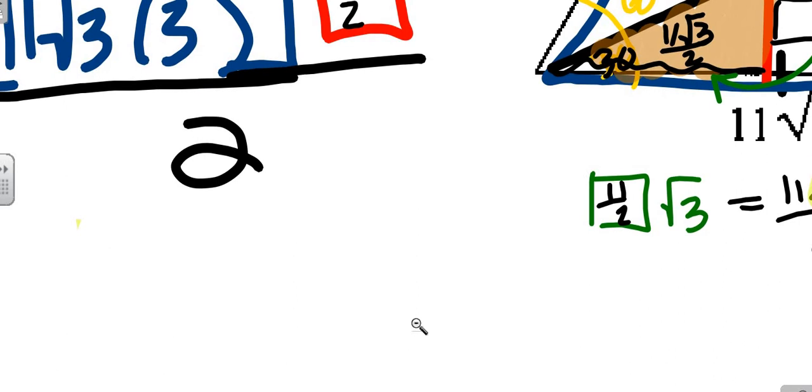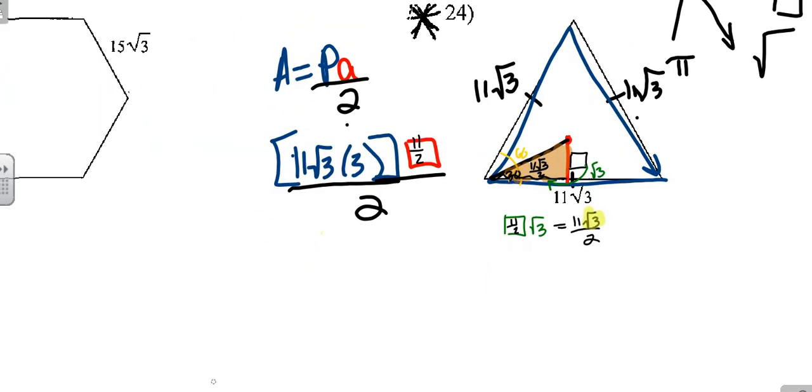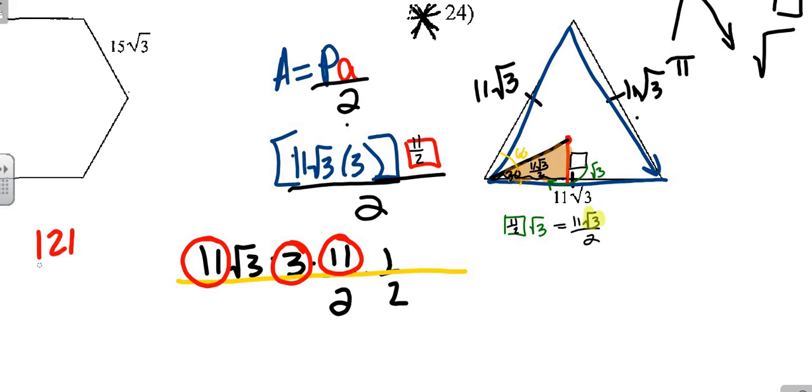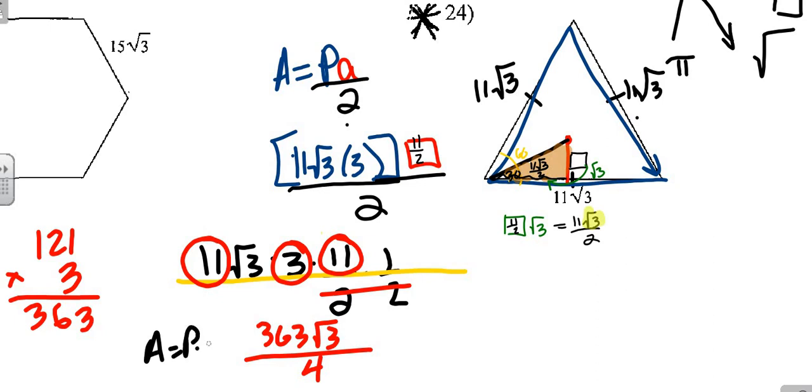So a lot of you are really uncomfortable with this fraction, so I'm going to take it out. Instead of dividing by 2, we're going to do this: 11 root 3 times 3 times 11 over 2 times 1 over 2. That way I get everything on a level playing field. Now we simply multiply. What I have here: 11 times 11 times 11 is 121 times 3. So I'm going to get 363 root 3 over 4, and you are done. Area equals perimeter times apothem over 2.